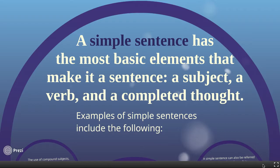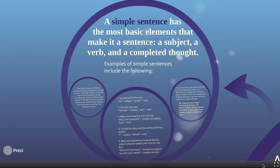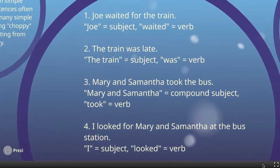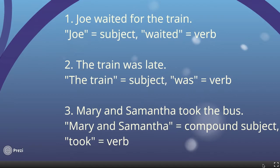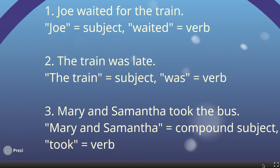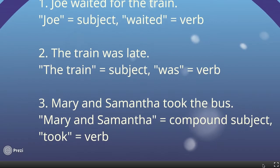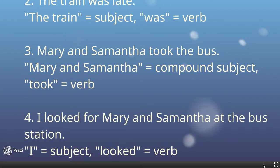That's the last part you have to have included. Here are some examples — I do want you to write the sentences down. First one: Joe waited for the train — subject being Joe, waited being the verb. Number two: the train was late — train being the subject, was being the verb. Number three: Mary and Samantha took the bus. This one's a little different because you have a compound subject — two people — but it is still a simple sentence.